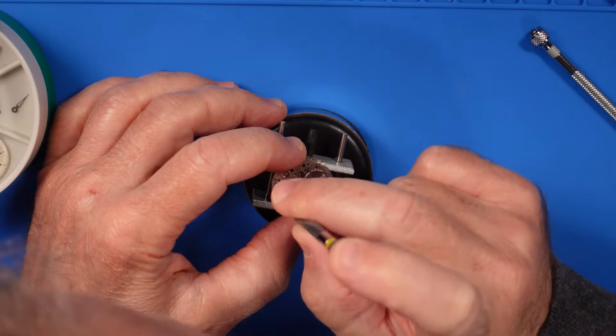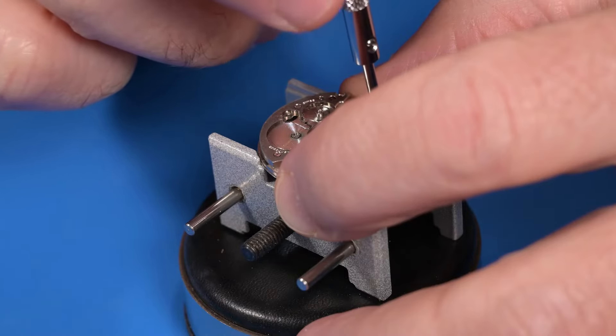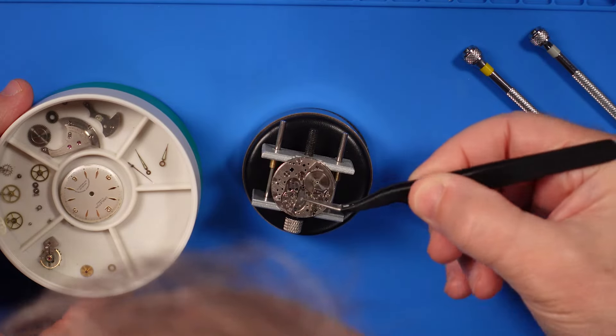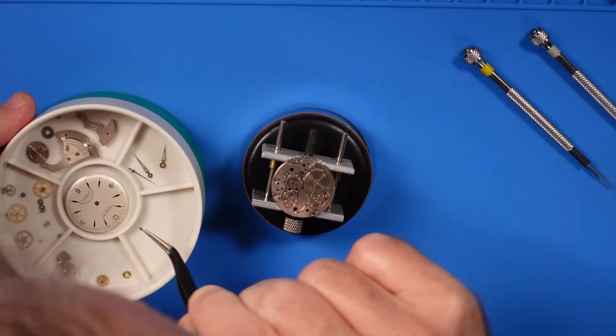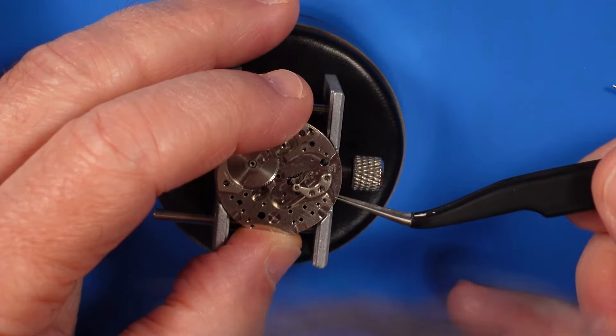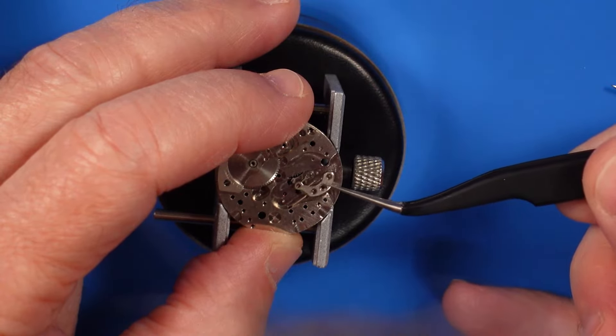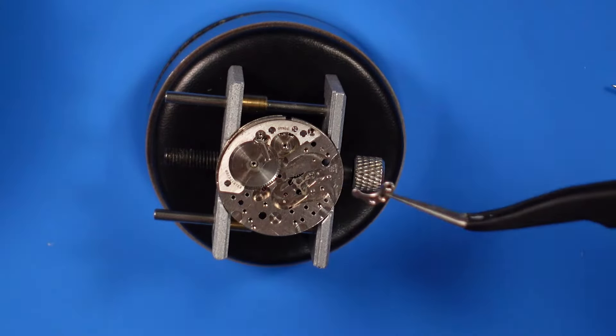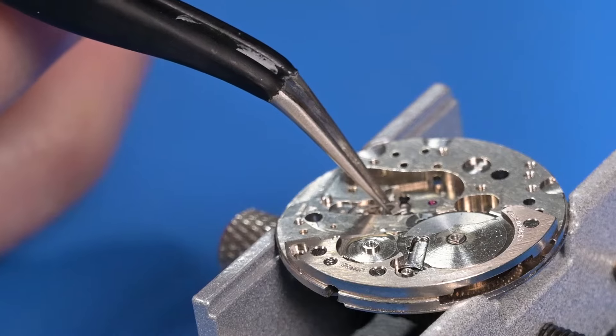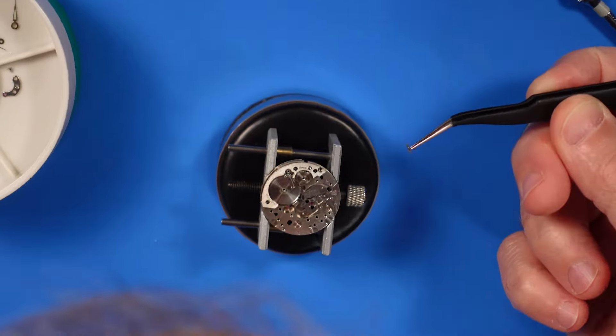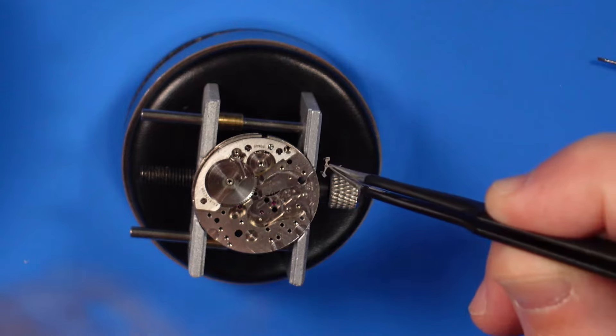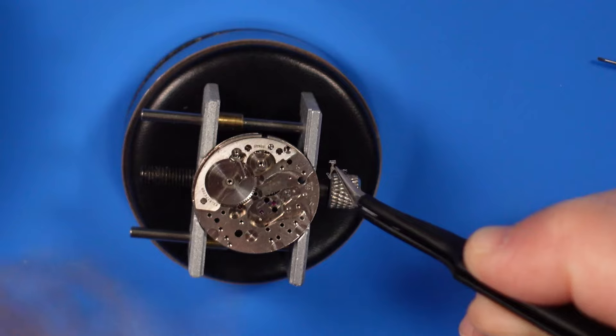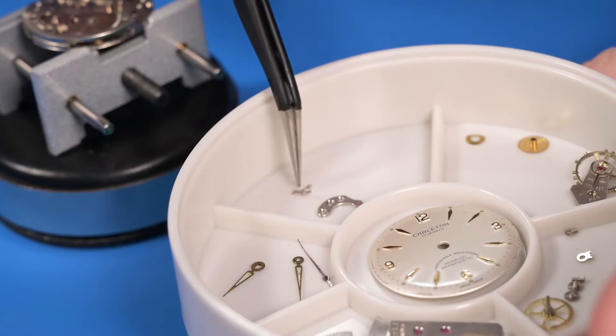On the back of the watch, I'm going to remove the pallet bridge, which holds the pallet in place. Here's the pallet bridge. And finally, carefully, we're going to remove the pallet, which is also called the anchor pallet, the pallet fork, or the fork. Call it what you will, it's a teeny tiny part.